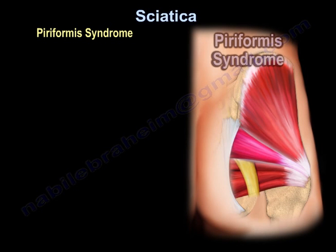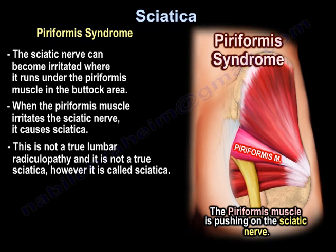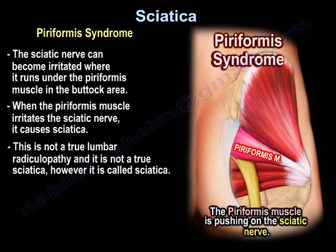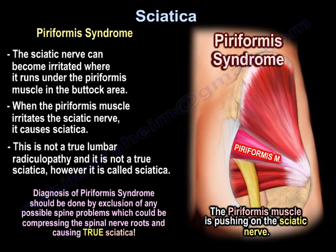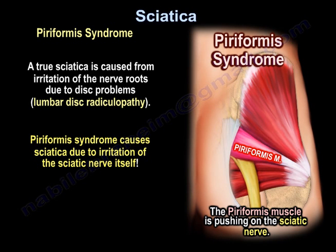Another common cause of sciatica is piriformis syndrome. The sciatic nerve can become irritated when it runs under the piriformis muscle in the buttock area. When the piriformis muscle irritates the sciatic nerve, it causes sciatica-like symptoms — it is not true lumbar radiculopathy, and it is not true sciatica, though it is called sciatica. Diagnosis of piriformis syndrome should be made by exclusion of any possible spine problems compressing the nerve roots and causing true sciatica. True sciatica is caused by irritation of the nerve roots due to disc problems, called lumbar disc radiculopathy, whereas piriformis syndrome causes symptoms due to irritation of the sciatic nerve itself.